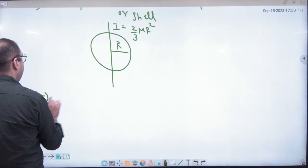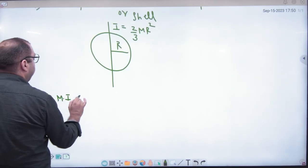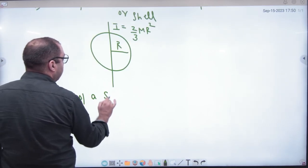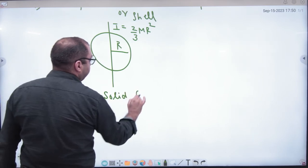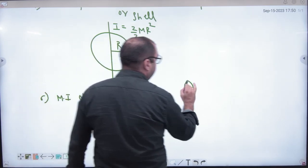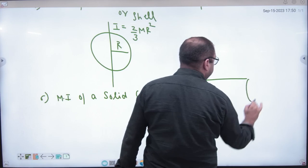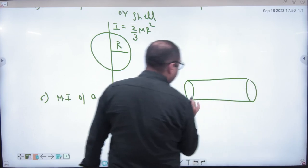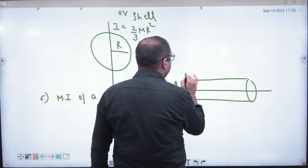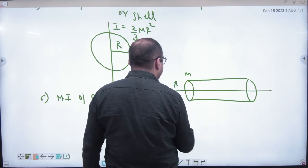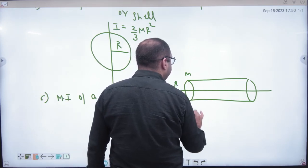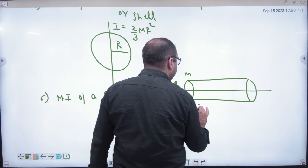Next is the moment of inertia of a solid cylinder. For a solid cylinder with the axis along its central axis, radius r, and mass m, the value is I = ½mr².